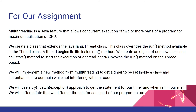For our specific code, multi-threading is a Java feature that allows concurrent execution of two or more parts of a program, maximizing CPU utilization. We will create a class that extends the java.lang.Thread class. This class overrides the run method available in the thread class. A thread begins its life inside the run method. We create an object of our new class and call the start method to start execution of a thread, which invokes the run method on the thread object. We will implement a new method for multi-threading to get a timer set inside a class and instantiate it to our main without interfering with our code.